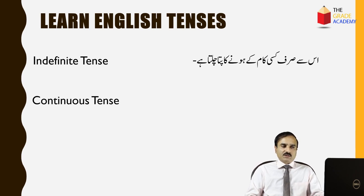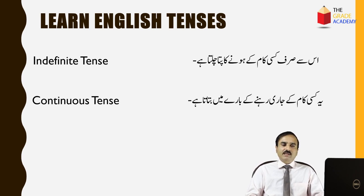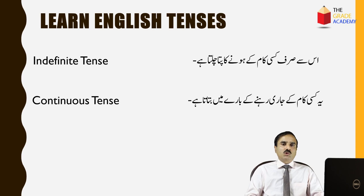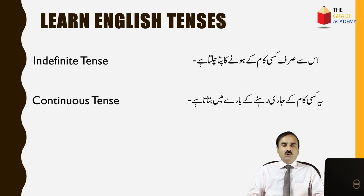फिर continuous tense। Continuous tense जो है, यह किसी काम के जारी रहने के बारे में बताता है। मिसाल के तौर पर — वो स्कूल जा रहा है, वो स्कूल जा रहा था, या वो स्कूल जा रहा होगा।